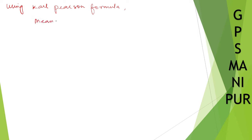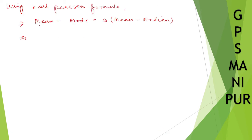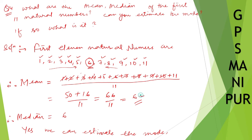Using Karl Pearson's formula: Mean − Mode = 3 × (Mean − Median). Yes, we can estimate the mode. Mean is 6 and median is also 6, so substituting: 6 − Mode = 3 × (6 − 6).